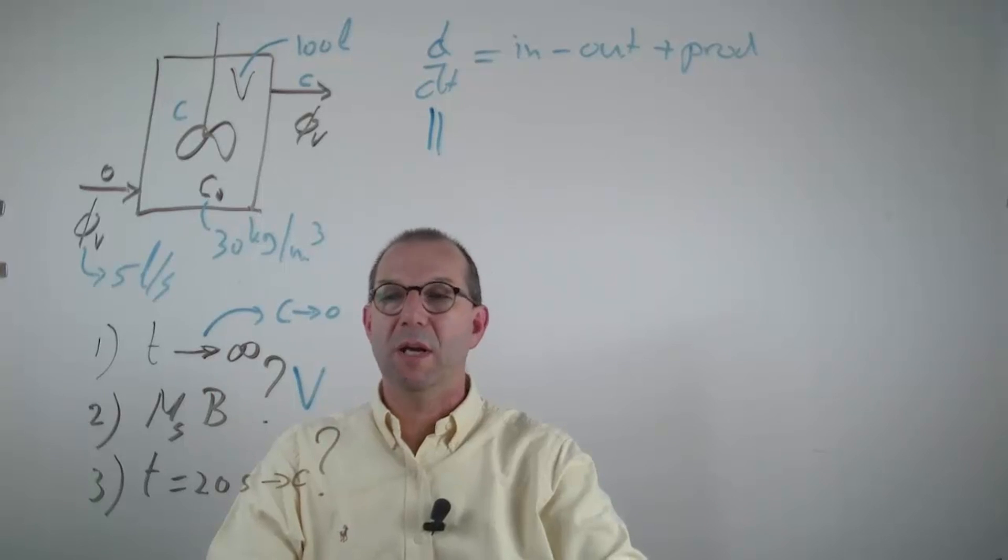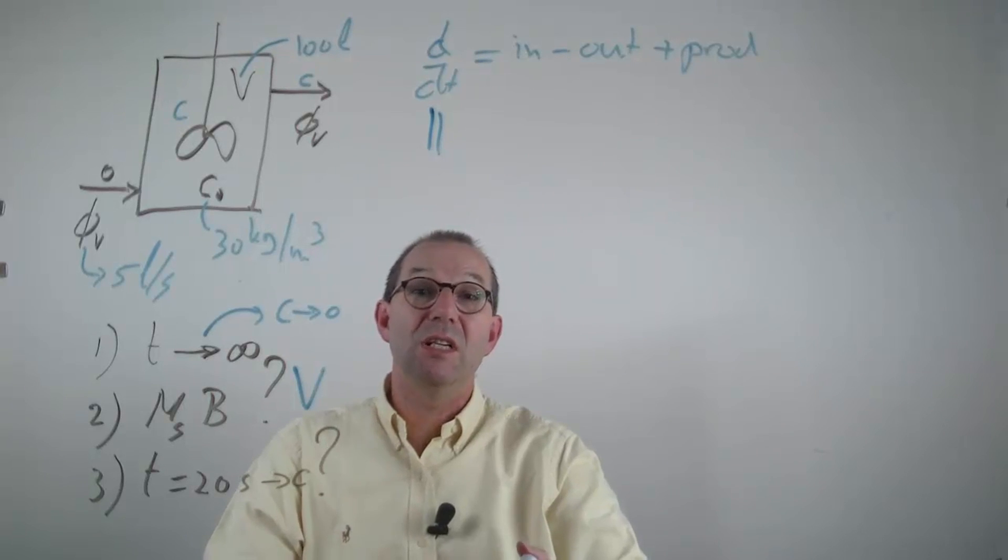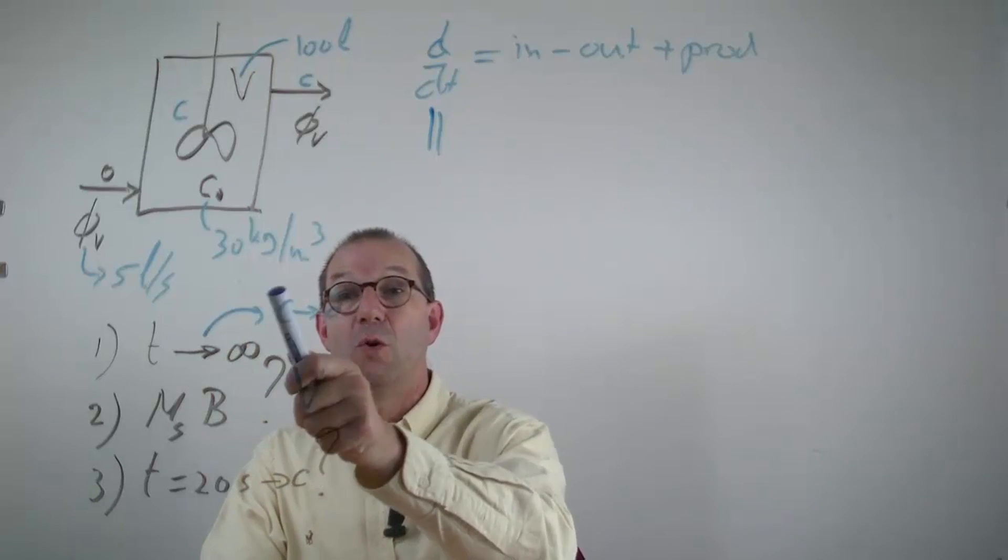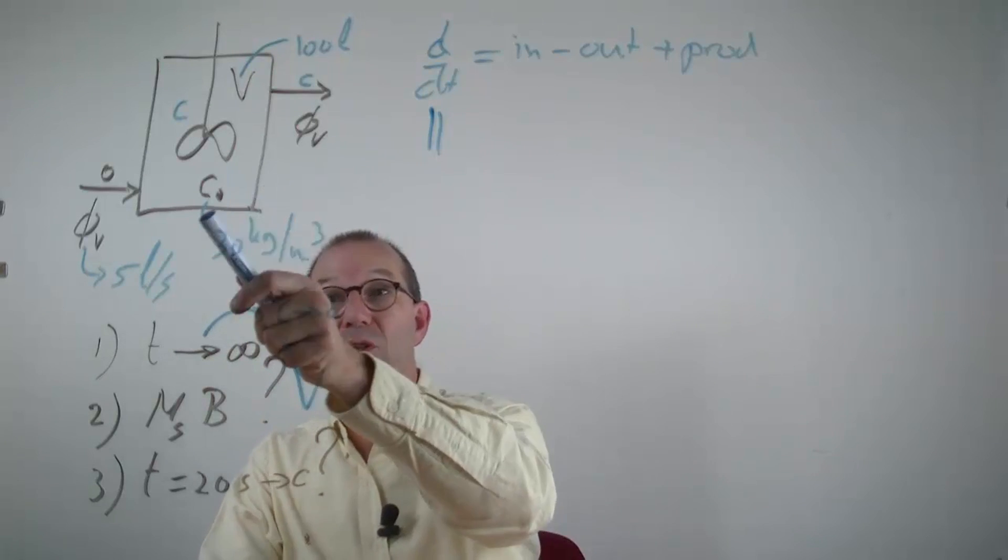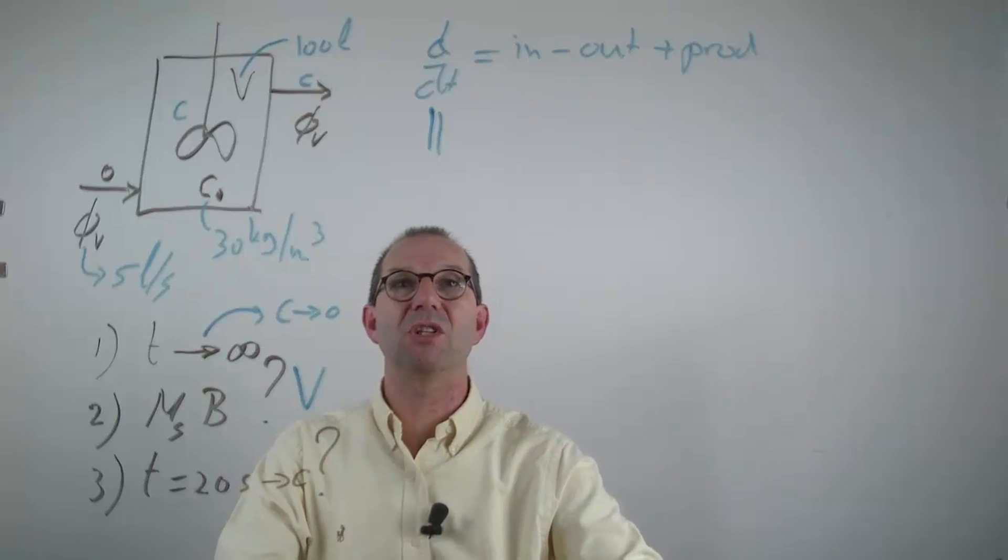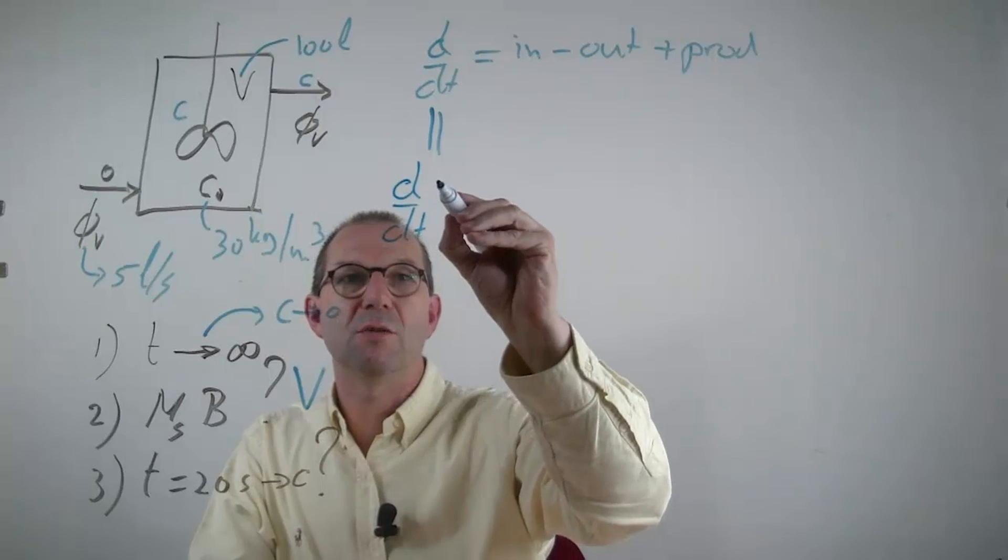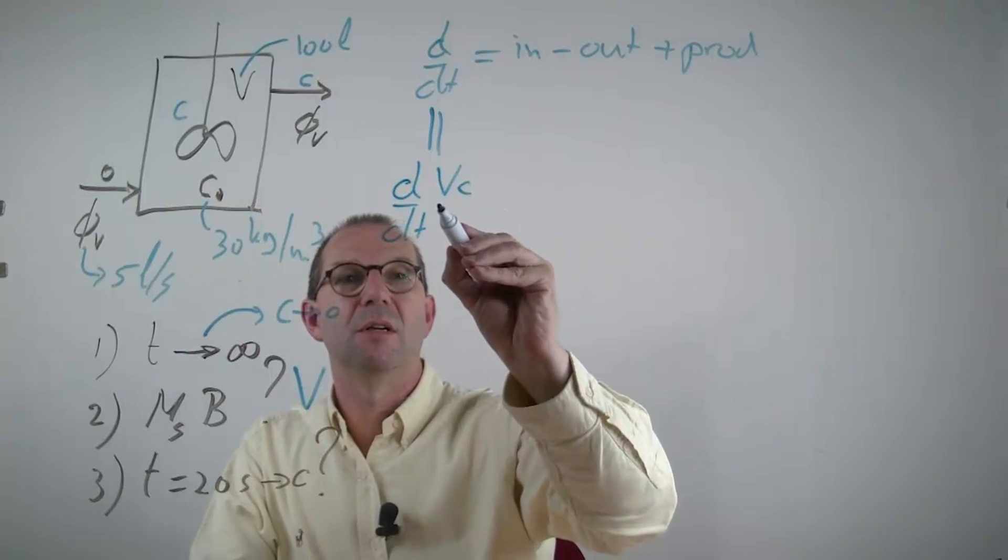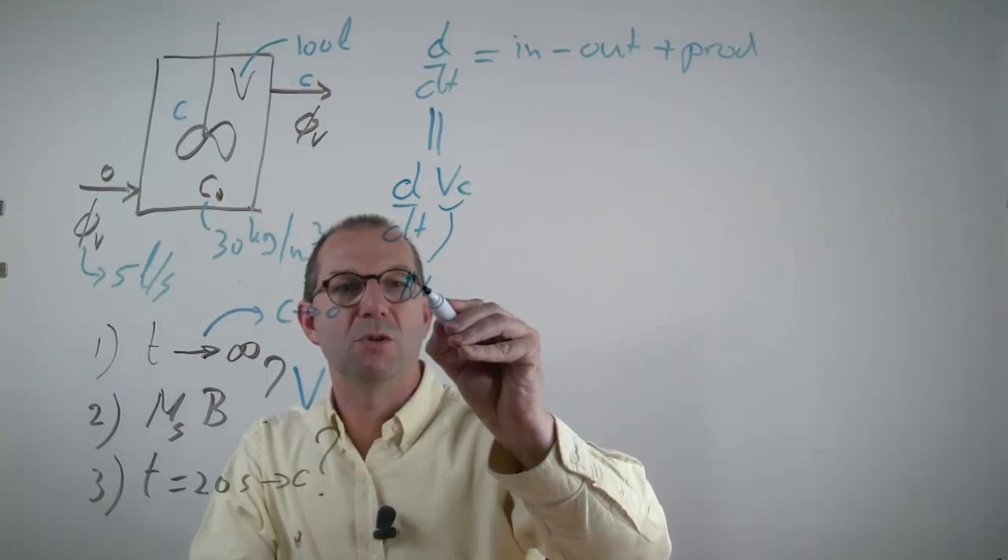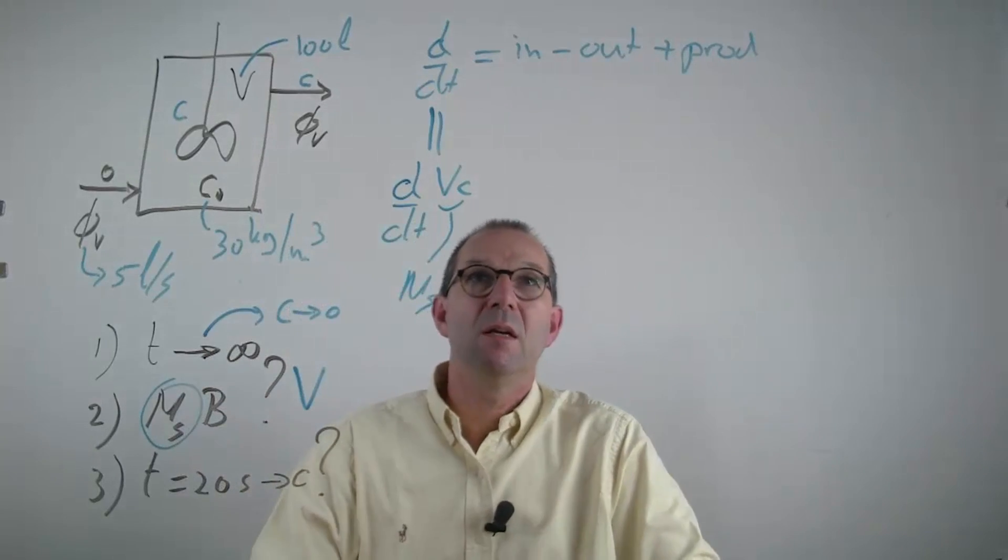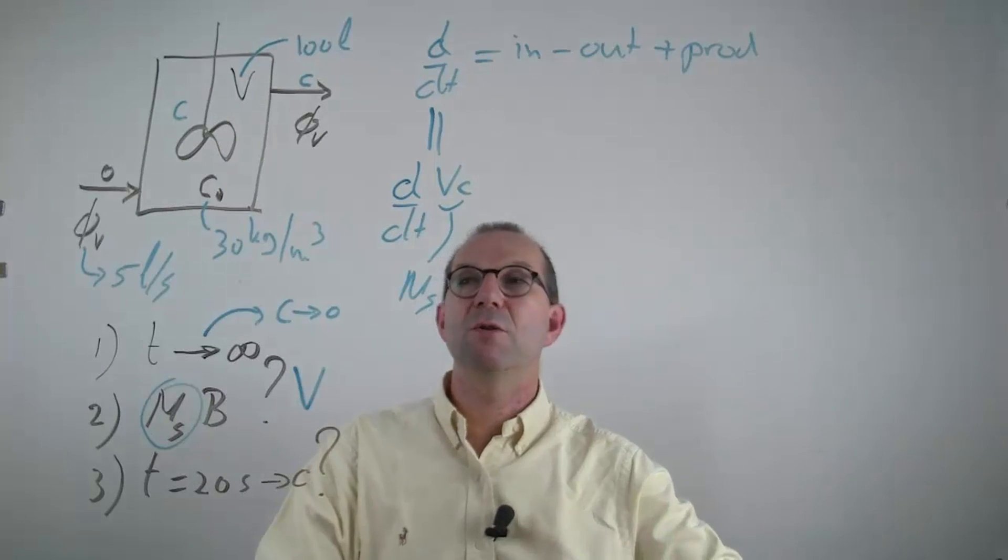Now I can fill this in. First question, once we have solved these: is this steady or unsteady? We already discussed that in the long run no salt will be left. We started with salt, so this must be unsteady. So the dV/dt term is non-zero and it actually reads as volume times concentration, because this is the mass of salt, it's a mass balance for the salt.